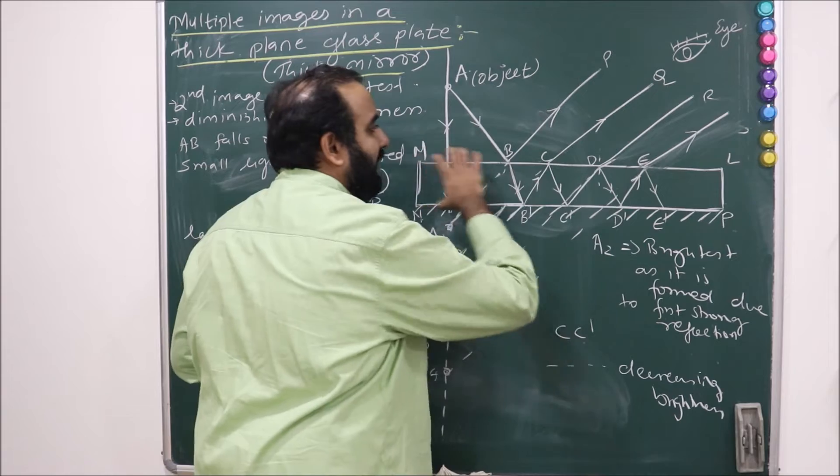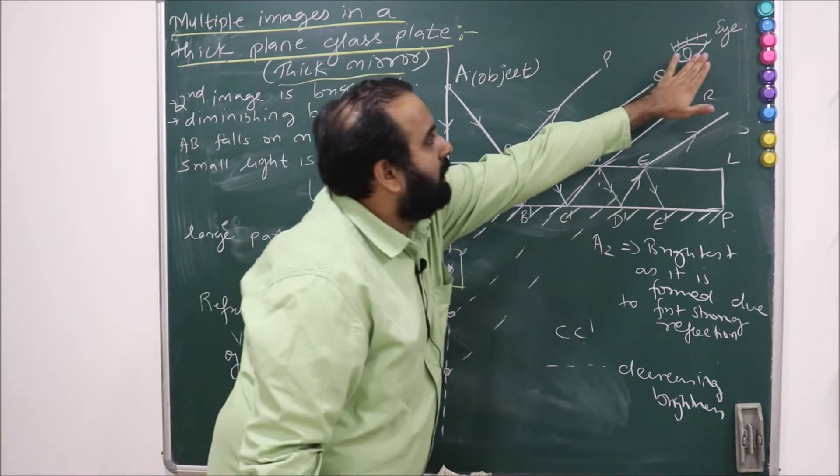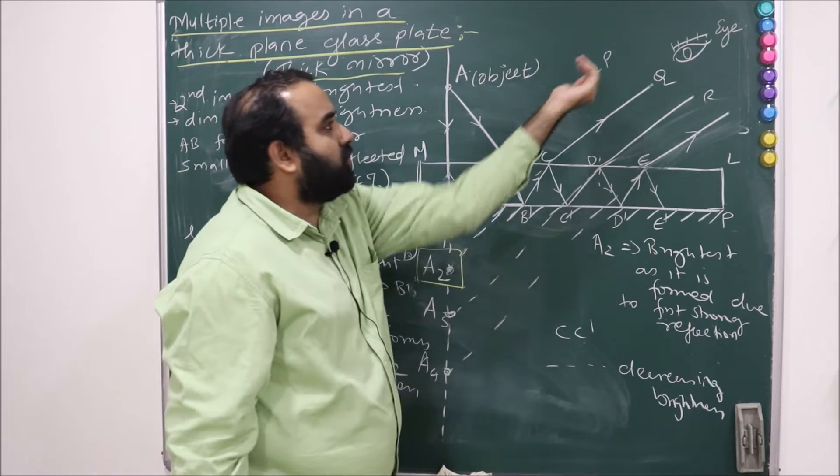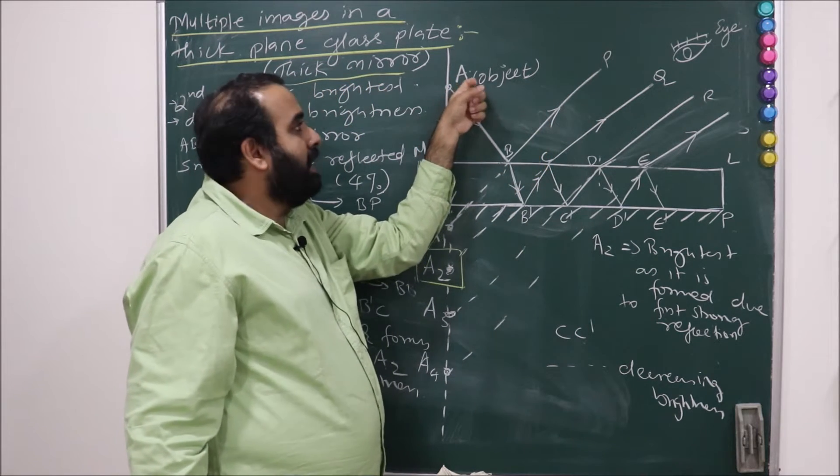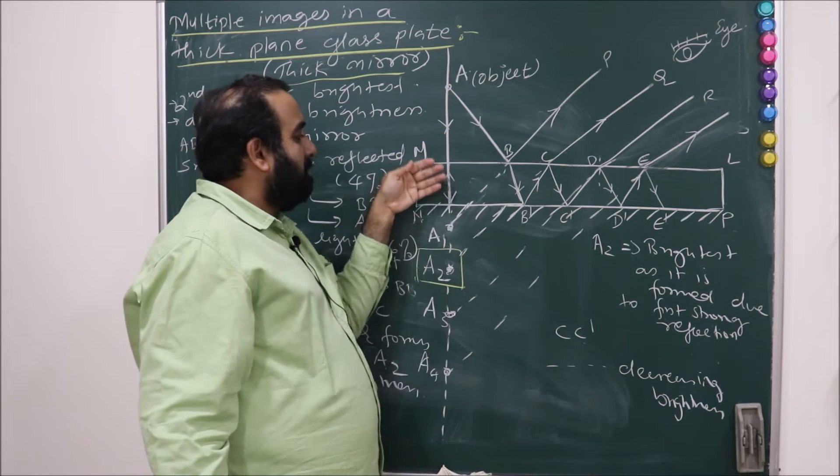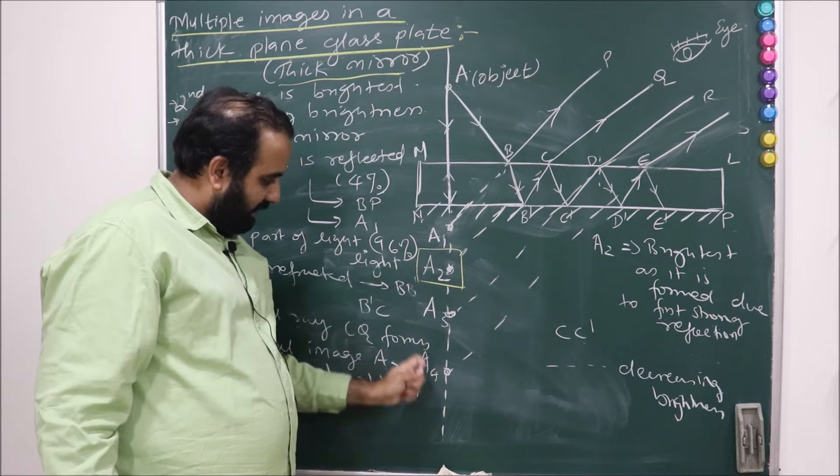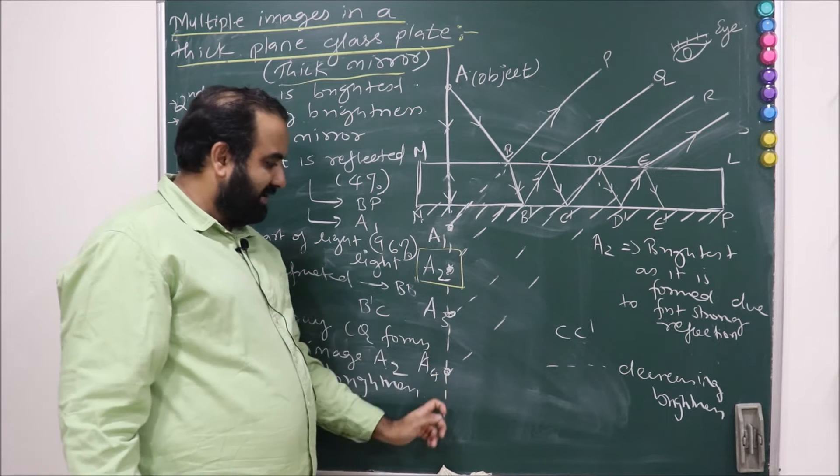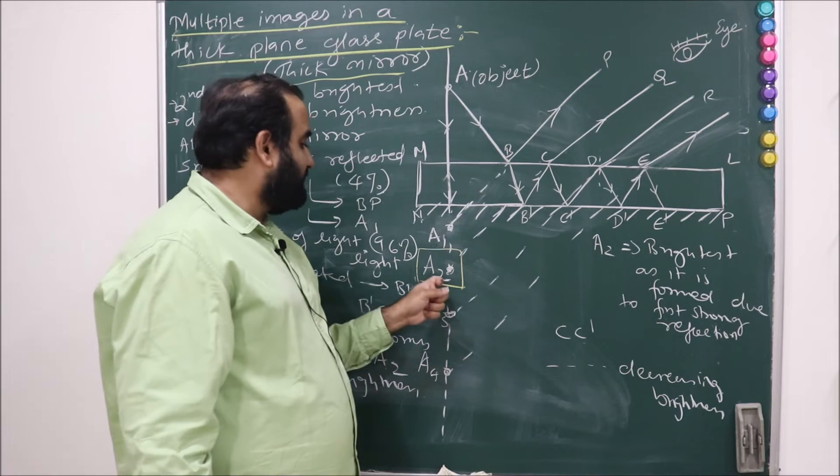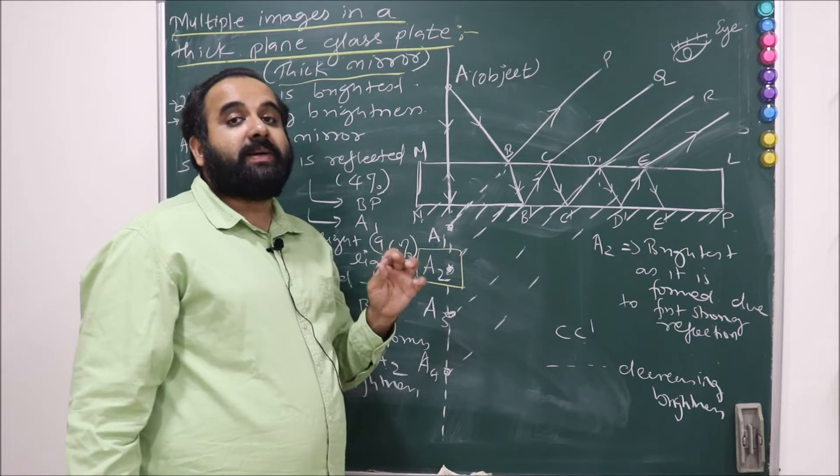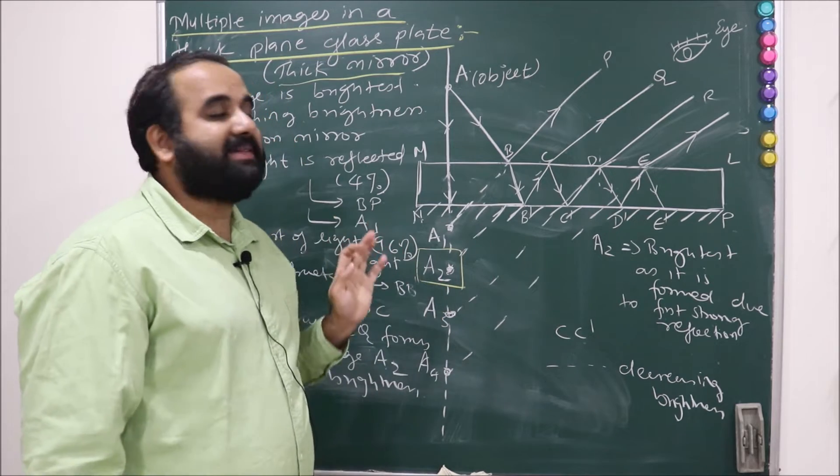So what have we done here? We have taken a thick glass slab LMNP and from here a human eye, the person is observing an object that is placed at point A. And we are going to see multiple images over here. Can you all see A1, A2, A3, A4 and there are more in the textbook, but the main point is A2 forms the maximum brightness. A2 is of maximum brightness.